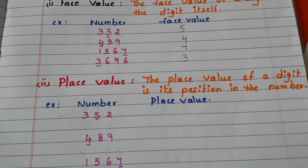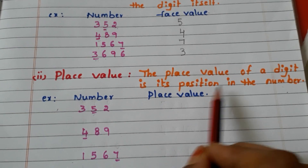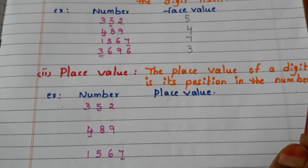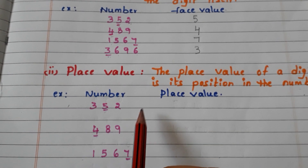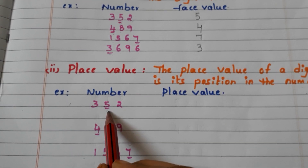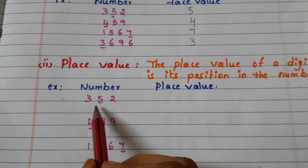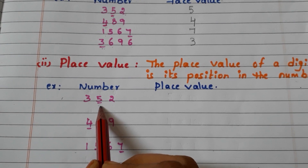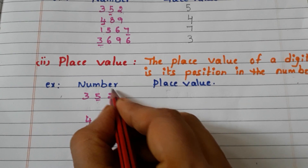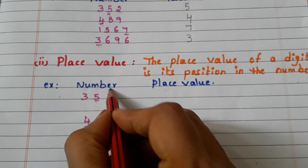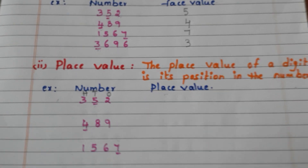Now let us move to place value. The place value of a digit is its position in the number. Let us see with examples. We have to find the place values of the underlined digits. For the number 352, the line is under 5, so we have to find the place value of 5. First, we write the places on top of the number: 1's, 10's, 100's.